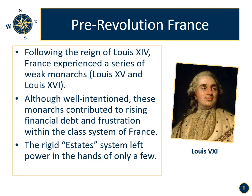Pre-revolution France. Following the reign of Louis XIV, France experienced a series of weak monarchs, most notably Louis XV and Louis XVI. Although well-intentioned, these monarchs contributed to rising financial debt and frustration within the class system of France. The rigid estate system left power in the hands of only a few. This power structure was also known as the Ancien Régime.